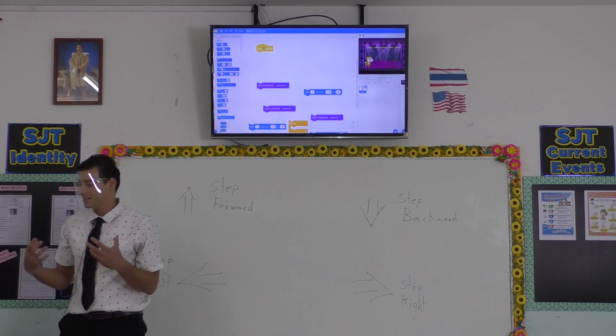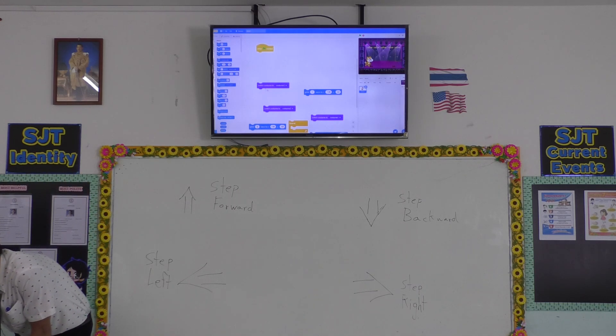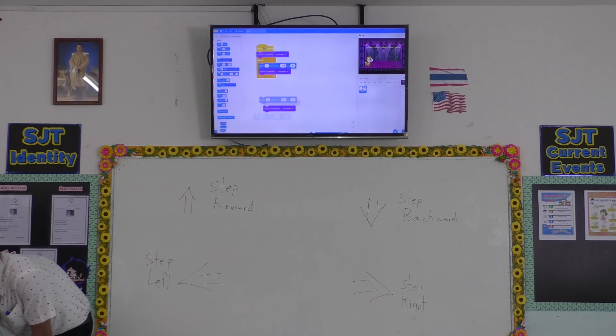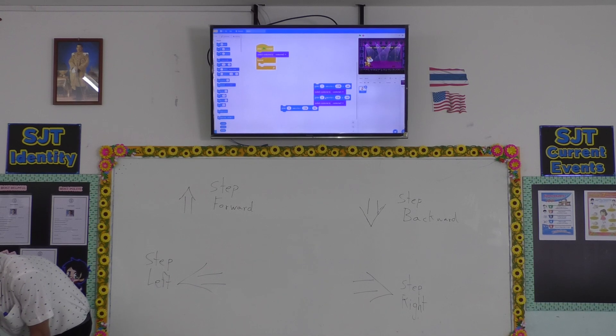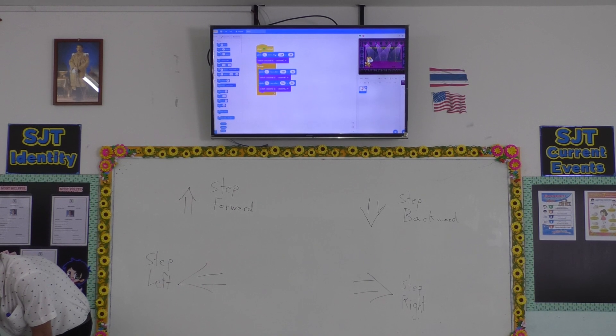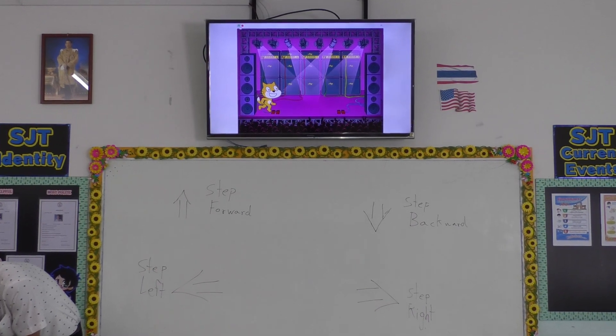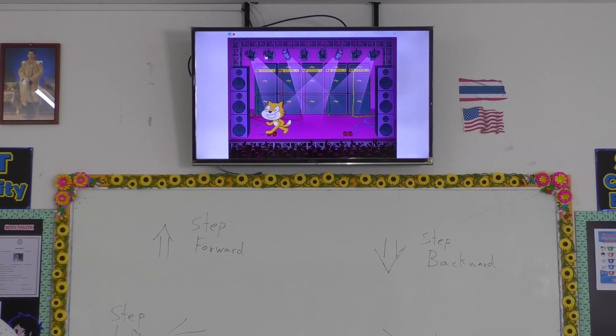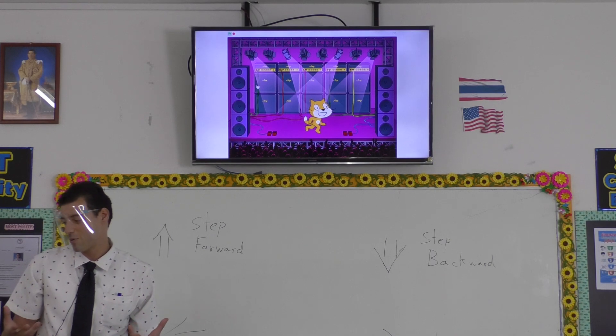So every program has a run function. That's the green flag. And so we can put blocks in. And finally, we have our program. Makes the sprite move. All right. That's how coding works.